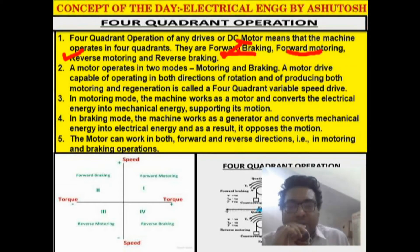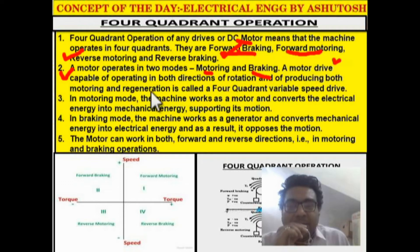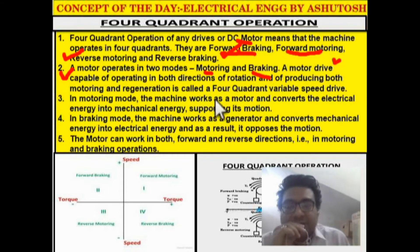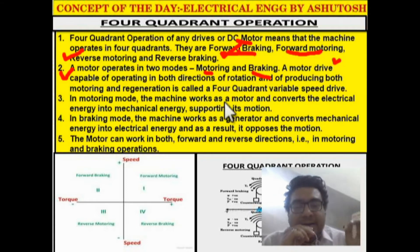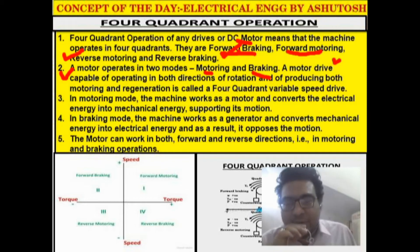A motor operates in two basic modes: motoring mode and braking mode. A motor drive capable of operating in both directions of rotation and producing both motoring and regeneration is called a four quadrant variable speed drive.